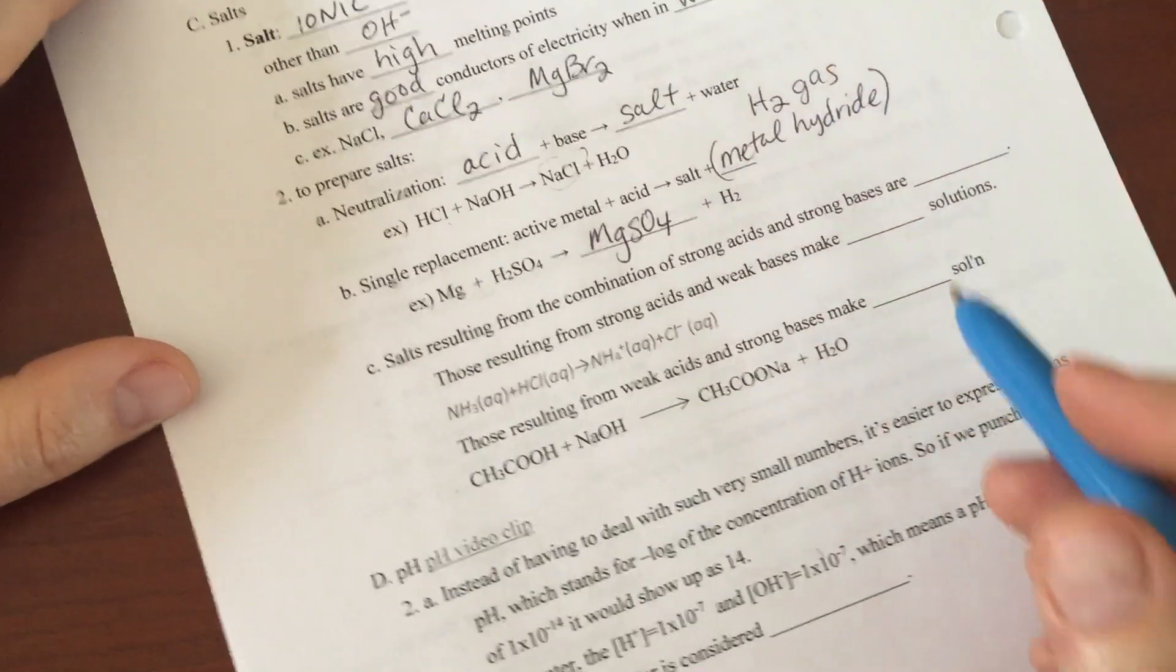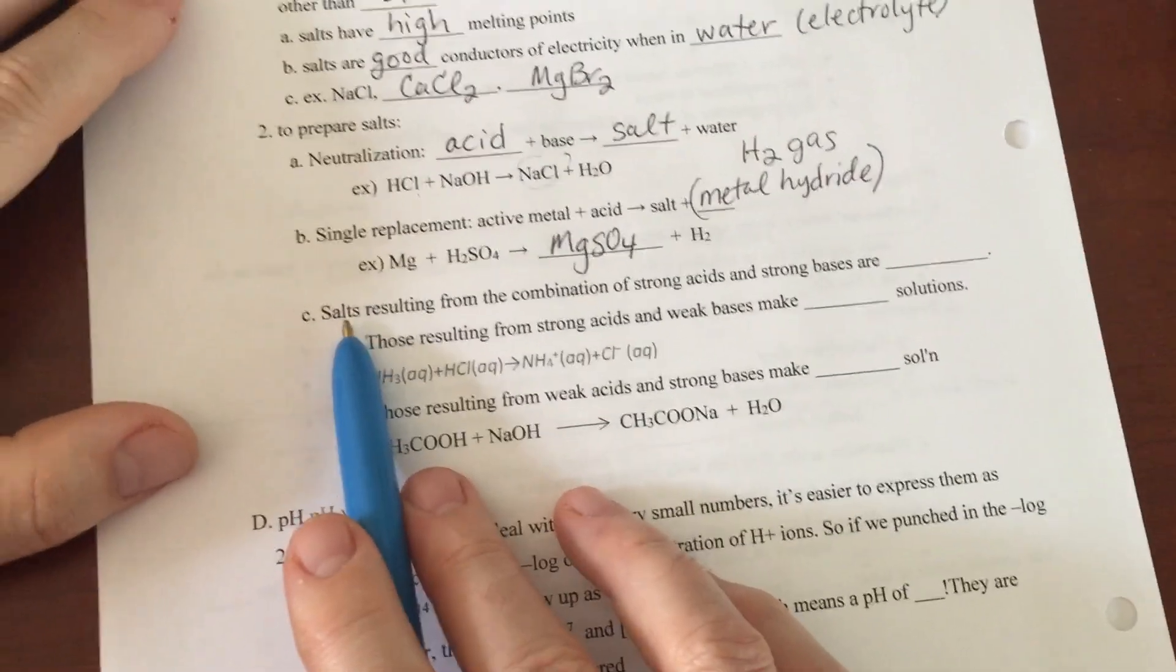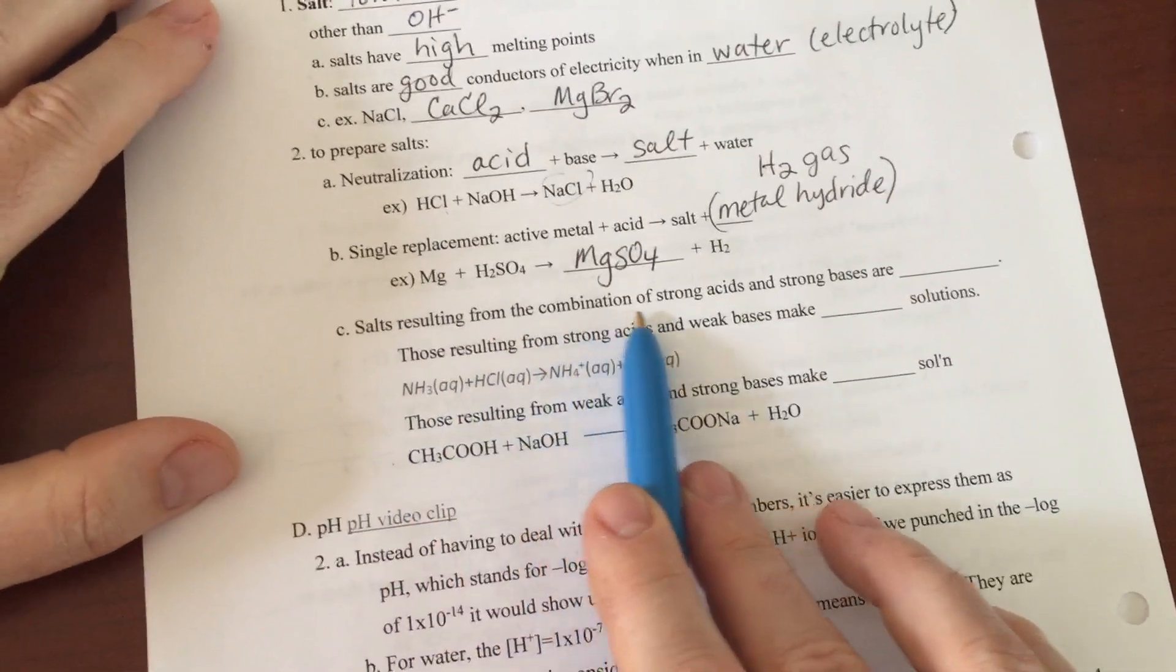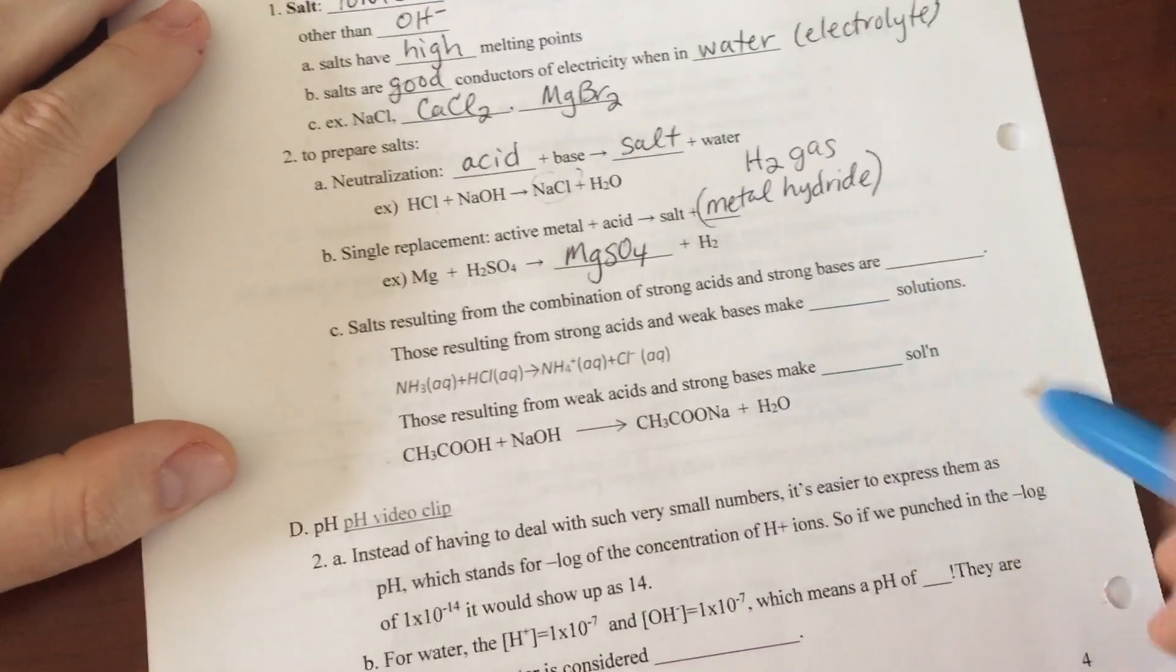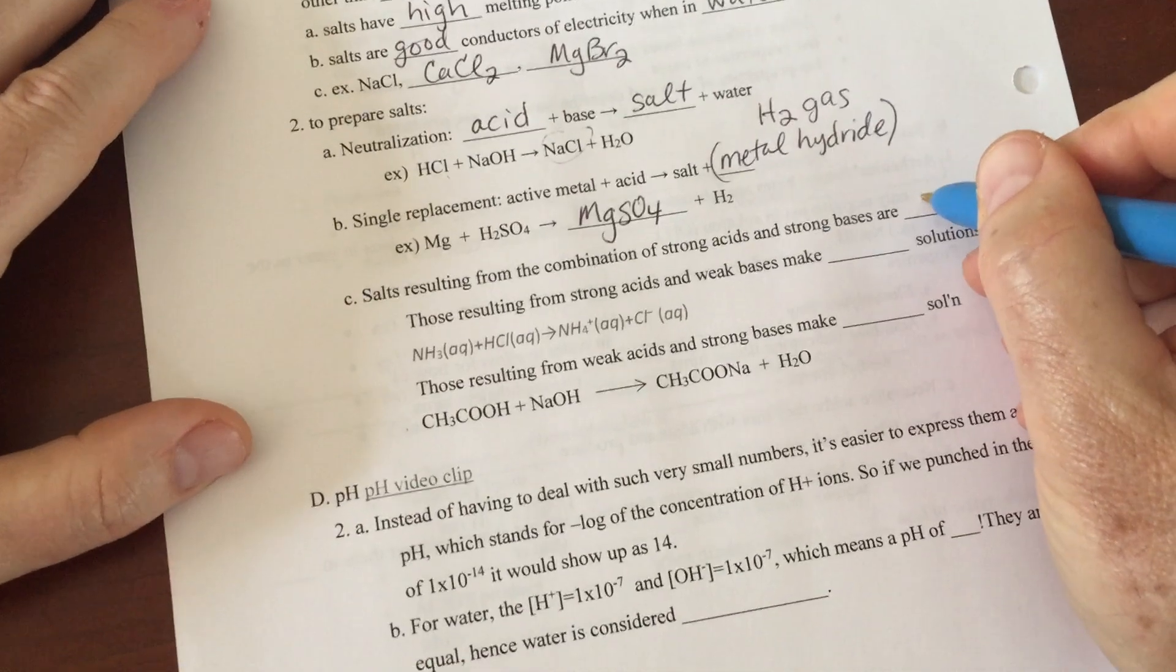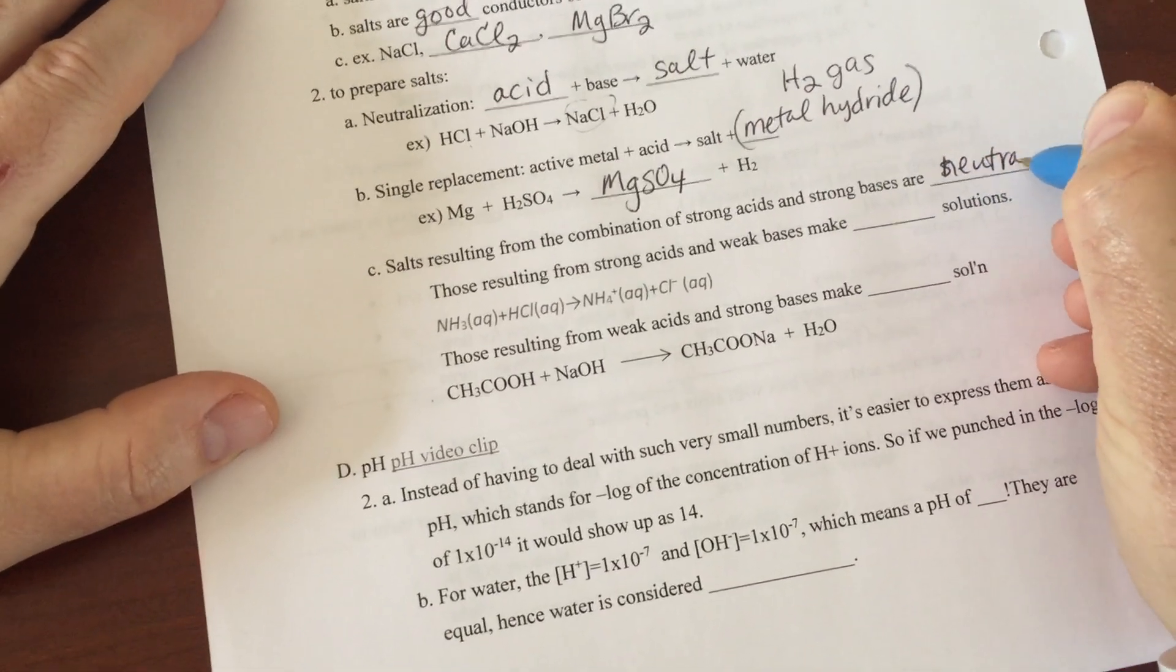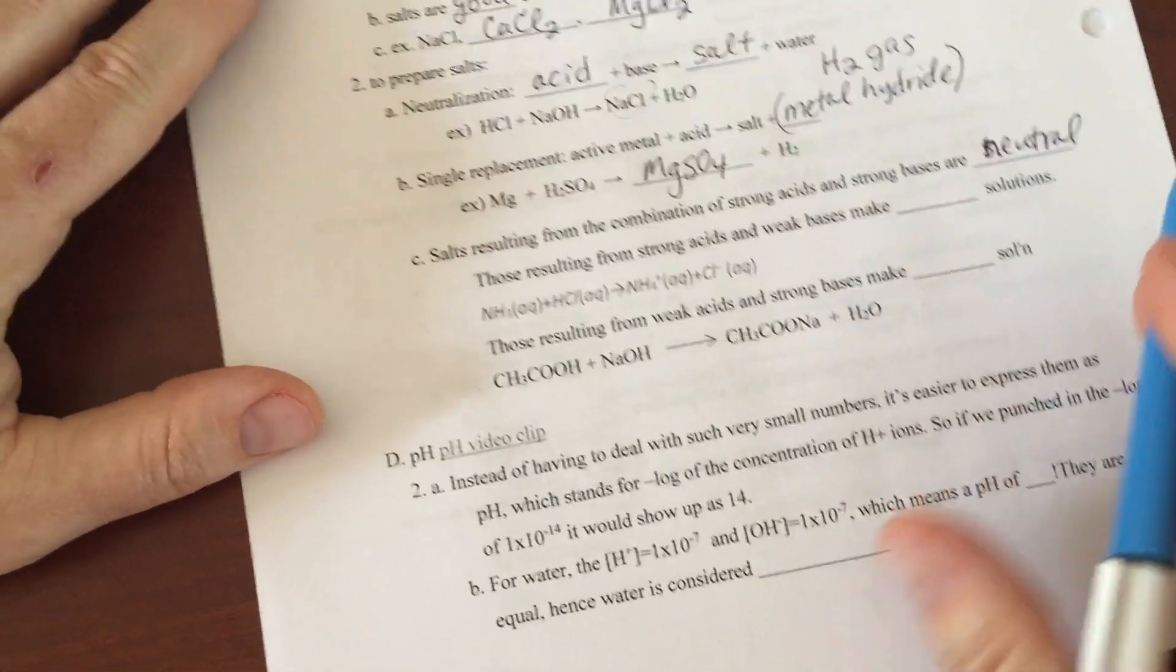The last little section is: salts resulting from the combination of strong acids and strong bases are, actually sorry, they are neutral. My fault, they are neutral. In other words, their pH is going to be about seven, because it takes a strong acid which neutralizes a strong base.